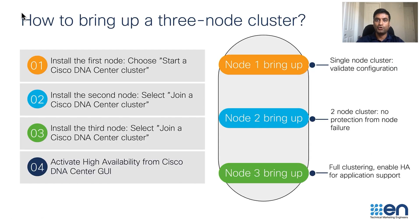To bring up a three-node cluster with high availability, always ensure the seed Cisco DNA Center node is up and running before adding the other two cluster nodes. Install the second node and choose 'join a Cisco DNA Center cluster' and wait until the installation is complete, then repeat the same process to install the third node. Make sure that the three nodes are successfully installed and operational with full stack deployed. You may now activate high availability from the system settings page on the Cisco DNA Center graphical user interface.